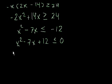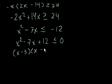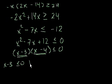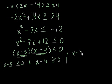We can factor that as x minus 3 times x minus 4 is less than or equal to 0. Now the product of the two expressions is a negative number or zero, so they must be of different signs. Either x minus 3 is less than or equal to 0 and x minus 4 is greater than or equal to 0, or x minus 3 is greater than or equal to 0 and x minus 4 is less than or equal to 0.